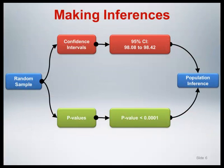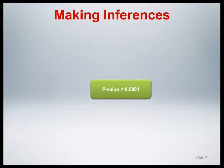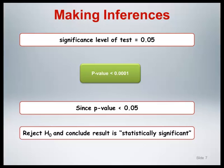Let's illustrate the use of a hypothesis test for the body temperature example. If we define the significance level of our test to be 0.05, then because the p-value, which is less than 0.0001, is less than 0.05, we reject the null hypothesis in favor of the alternative hypothesis and conclude the result is statistically significant. Remember that we originally specified a two-sided alternative for this example, so when we say 'in favor of the alternative hypothesis,' that simply means we conclude that the true population mean value is not equal to 98.6 degrees Fahrenheit.